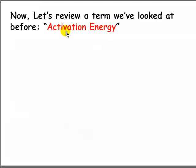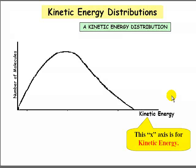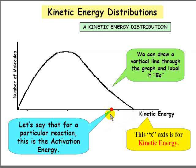Now let's review a term we've looked at before: activation energy. Activation energy is the minimum kinetic energy particles must collide with in order to have a successful collision. It's also called the EA. Looking at our kinetic energy distribution, the x-axis is the axis for kinetic energy. For a particular reaction, we can draw a vertical line through this graph and call it EA.